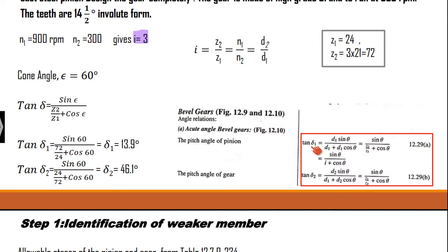Delta 1 is obtained when we substitute the value of theta as 60 degrees. Based on our equation from the data handbook, it has to be read as theta. So the value of theta is 60 degrees. Upon substituting, we get the value of delta 1 as 13.9 degrees and delta 2 as 46.1 degrees.